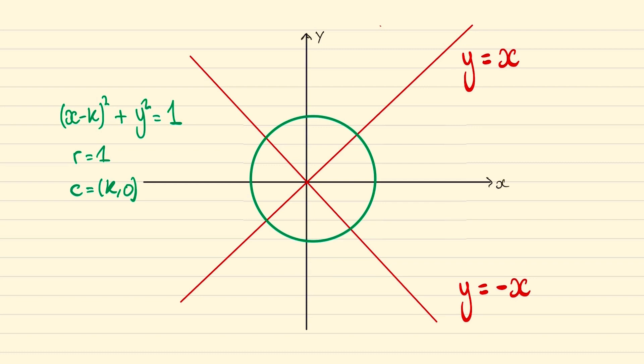And we can realize there'll be exactly two solutions when this circle is tangent to the lines y equals plus or minus x. And the centre point which is at k will have a distance of 1 to these tangent points since that is the same as the radius.